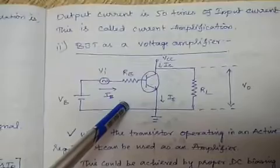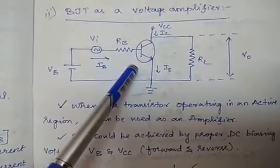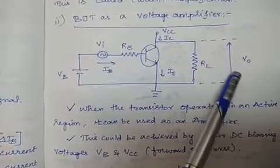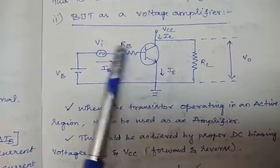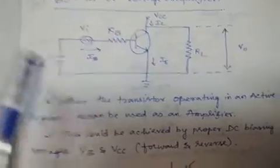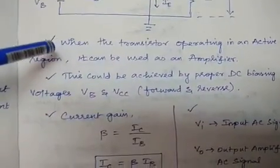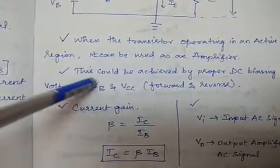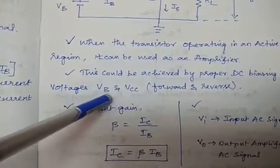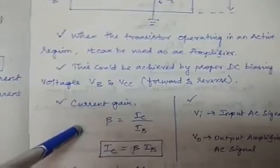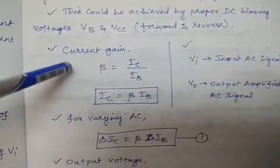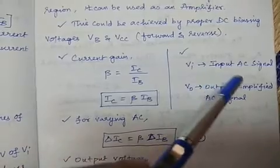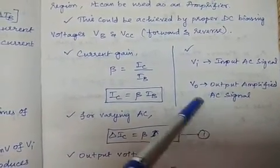Next, BJT as a voltage amplifier. The same circuit is used here with DC supplies Vb and Vcc, and Vin and Vout are AC values. Resistors and branch currents are also shown. The same conditions apply: the transistor must operate in the active region using proper DC biasing, with current gain beta equals Ic over Ib and Ic equals beta times Ib.